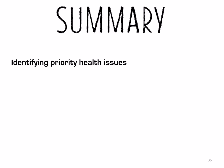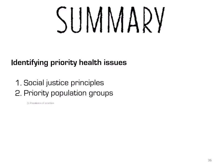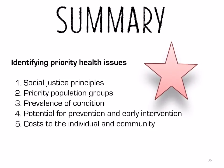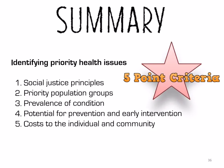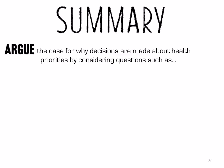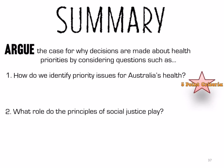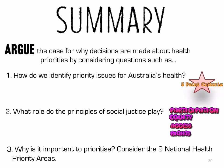To summarise, it's important to understand the five factors in identifying priority health issues as part of this five-point criteria. You need to be able to argue why decisions are made about health priorities, considering: how do we identify priority health issues for Australia's health; what role do the principles of social justice play — participation, equity, access, and rights; and why is it important to prioritise? Consider the nine national health priority areas and why they are priorities. Thank you for listening.